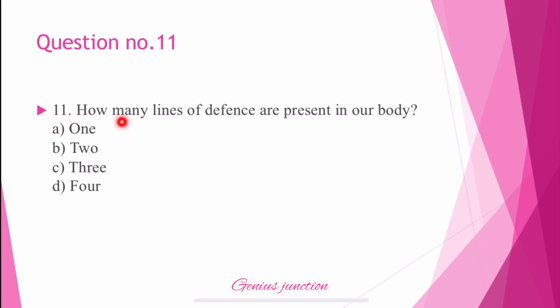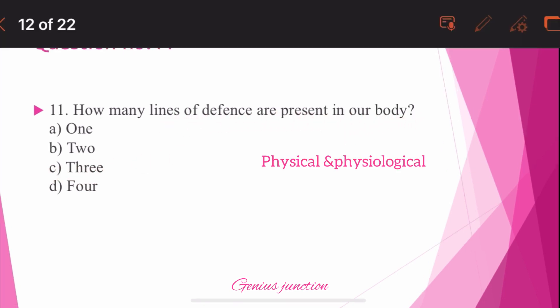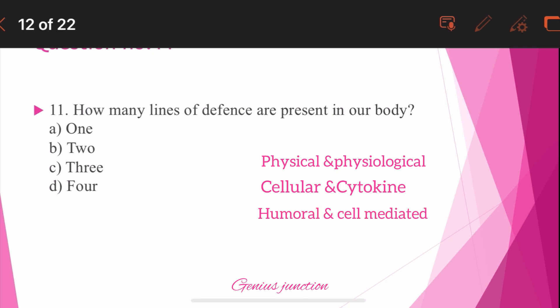Question number 11: How many lines of defense are present in our body? Options are: 1, 2, 3, and 4. The right answer is C — 3. There are 3 lines of defense in our body. The first line is physical and physiological barriers, the second line is cellular and cytokine barriers, and the third line is humoral and cell-mediated immunity.